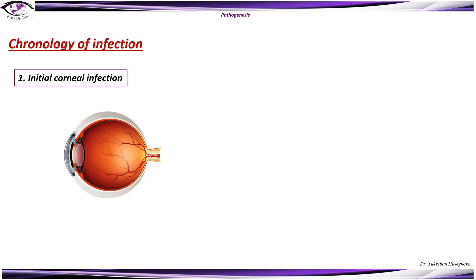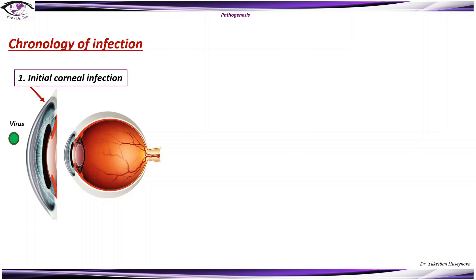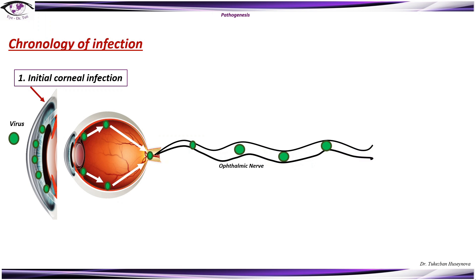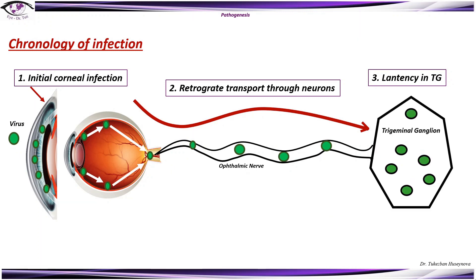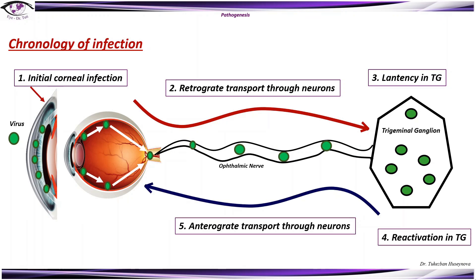Pathogenesis — chronology of infection. Initial corneal infection starts with the virus which then replicates in the epithelium. The virus then travels through the ciliary and ophthalmic nerves to the trigeminal ganglion in a retrograde fashion, where it establishes a latent infection that can last for the lifetime of the host. Stress-induced stimuli periodically reactivate the virus, which then travels in an anterograde fashion back to the initial infection site, leading to renewed corneal infection.